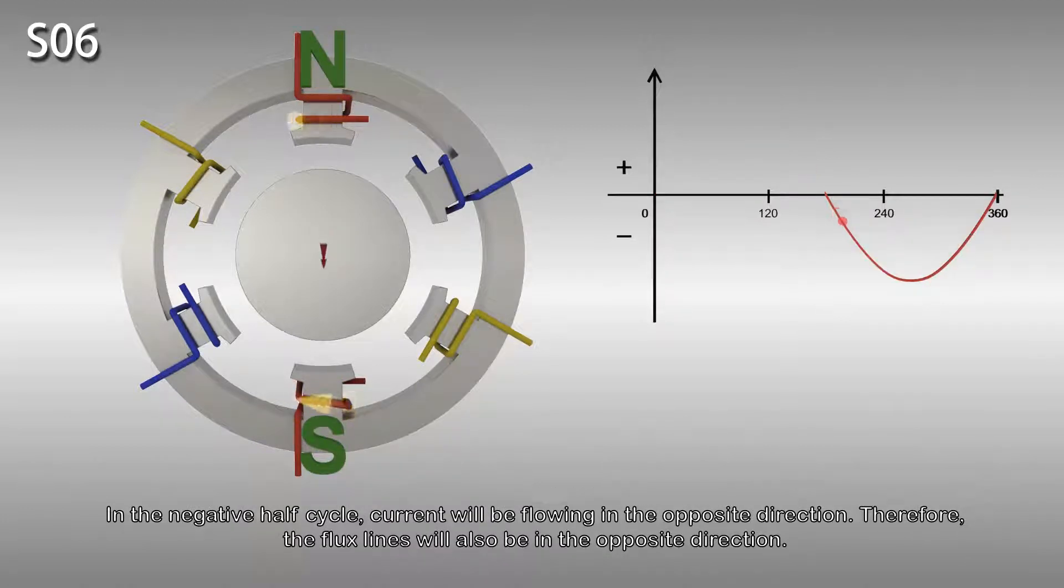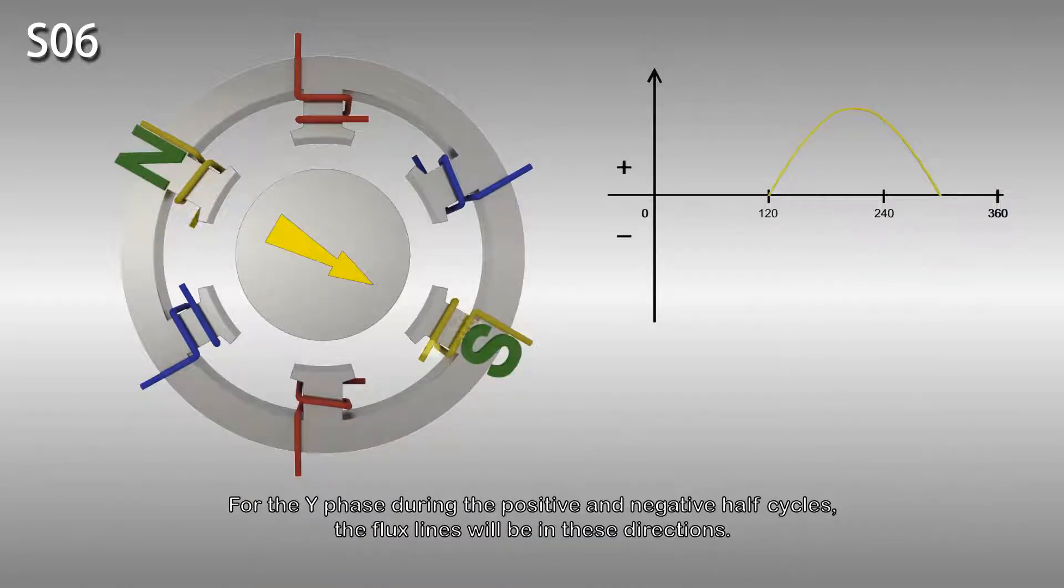In the negative half cycle, current will be flowing in the opposite direction. Therefore, the flux lines will also be in the opposite direction. For the Y phase during the positive and negative half cycles, the flux lines will be in these directions.